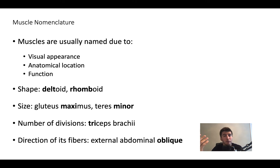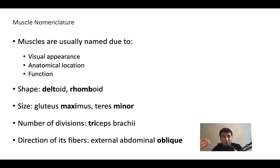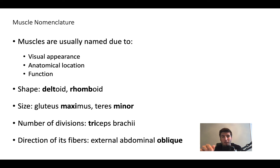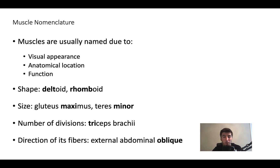Shape — deltoid. What does 'delt' mean? Rhomboid. What does 'rhomb' mean? Size — gluteus maximus tells us what muscle it is because of the size of it. Maximus. Teres minor — you can look at it and see which one the teres minor is based on the size; it's smaller. Number of divisions — tri means three, so triceps brachii. And then the direction of its fibers.